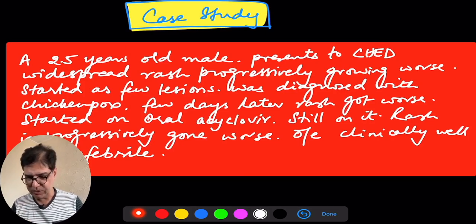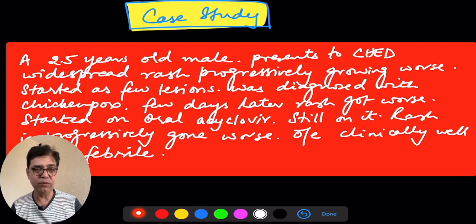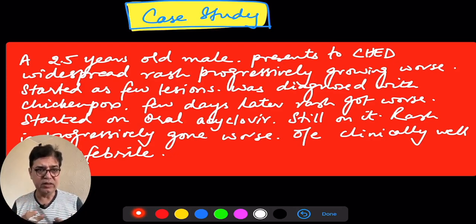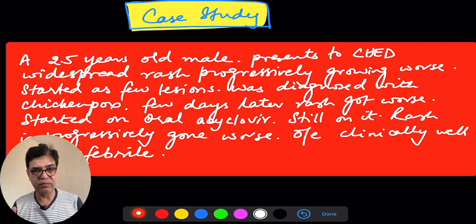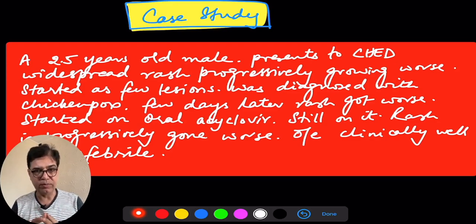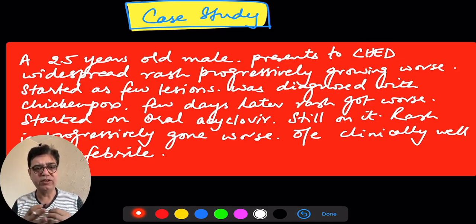Let me give you a case study — the case I came across recently. A two-and-a-half-year-old male child presented to the children's emergency department with a widespread progressively worsening rash. It started seven days ago with a few lesions; he was seen by his primary care provider who thought he had chickenpox and advised paracetamol for fever. A few days later the rash got worse, so he was started on oral acyclovir. When we saw him, the rash had progressively worsened — widespread vesicular rash with encrustation, some lesions weeping, densely present on the face, torso, and limbs.